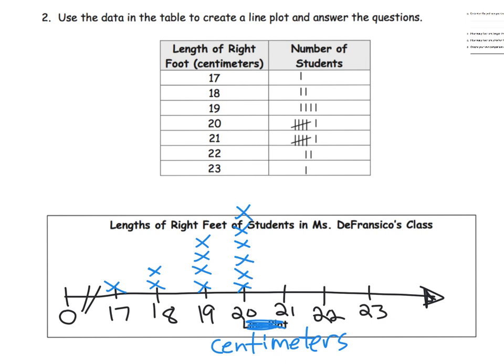I'm trying to line up my X's so the second, third, and fourth rows align like stories of a building. We have six people at 20 centimeters, also six people at 21 — I'll try to make that the exact same height as 20. Then 22 has two people, and 23 has just one person.